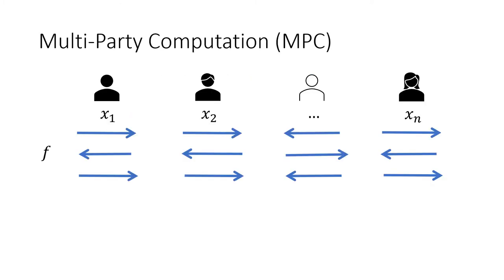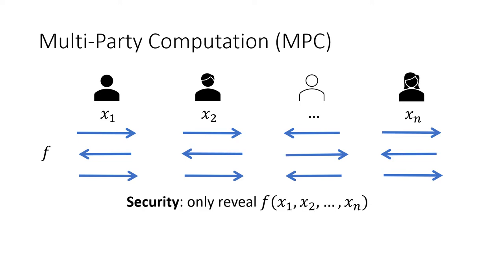Multiparty Computation is a multi-round protocol between several parties. Each party has some input x_i, and the goal of the protocol is to have these parties jointly compute some function f. For security, we require that at the end of the protocol, all these parties can only learn the output of the function f, and anything else about their inputs x_1 to x_n is hidden.